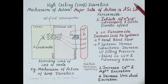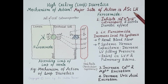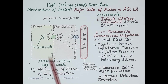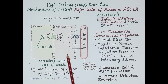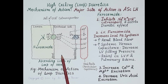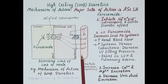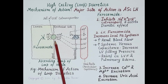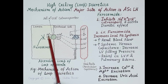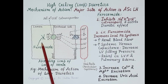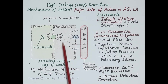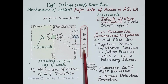The major site of action of loop diuretics is the thick ascending limb of the loop of Henle. The luminal epithelial cell has an apical surface facing the lumen and a basolateral surface close to the vasa recta. The sodium-potassium-2-chloride co-transporter (NKCC2) is responsible for transporting sodium, chloride, and potassium from the filtrate into the epithelial cell, which are then transported to the peritubular capillaries.